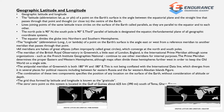The North Pole is 90 degrees north and the South Pole is 90 degrees south. The equator divides the earth into the Northern Hemisphere and Southern Hemisphere. The meridian of the British Royal Observatory in Greenwich, a little east of London, England, is the prime meridian. The antipodal meridian is 180 degrees west and 180 degrees east. The grid formed by latitude and longitude is called the graticule.